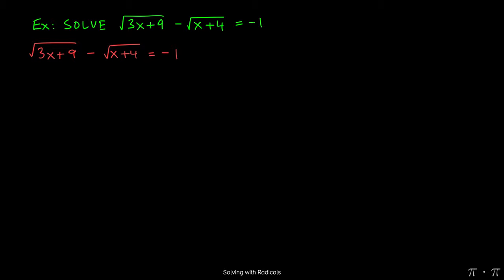We start by recognizing that we have two radicals on the same side of the equation, so we begin by isolating each radical on one side. This can be easily accomplished by moving the square root of x plus 4 from the left-hand side to the right-hand side.